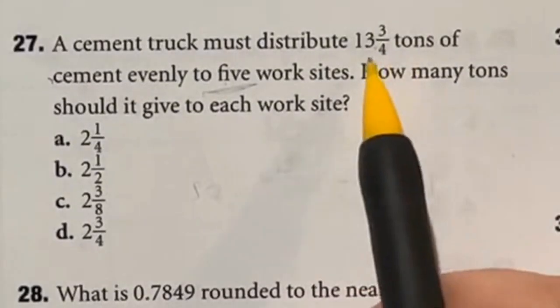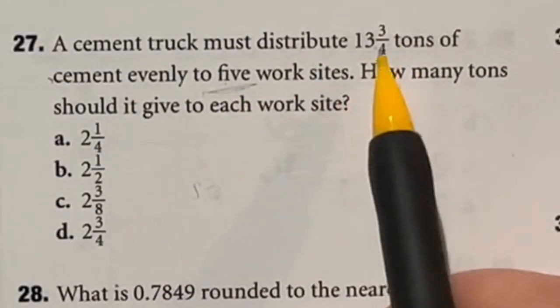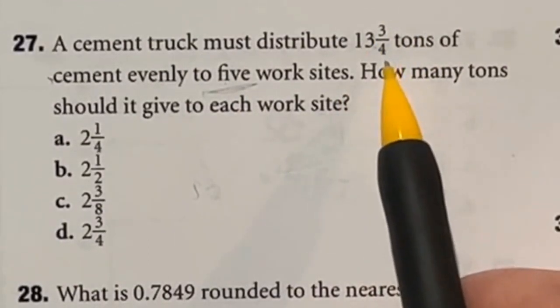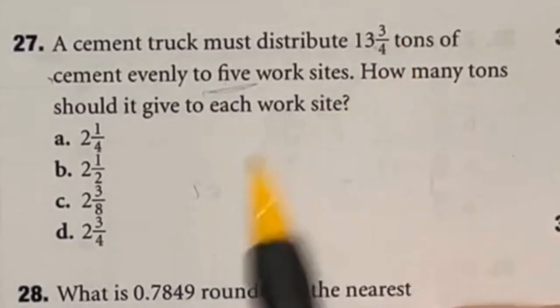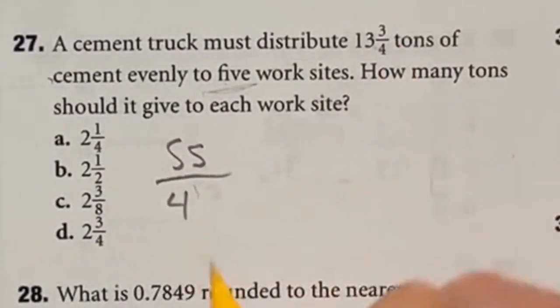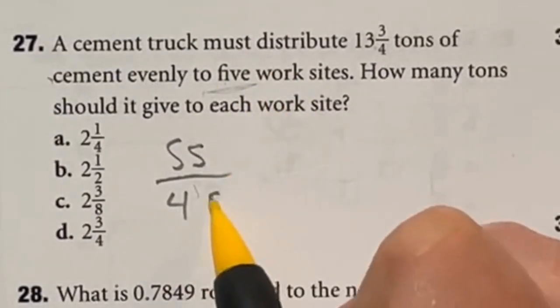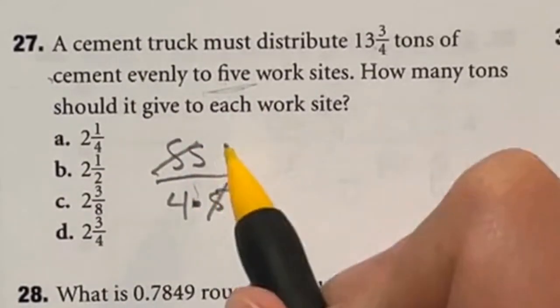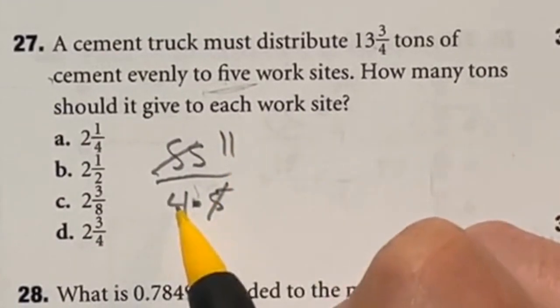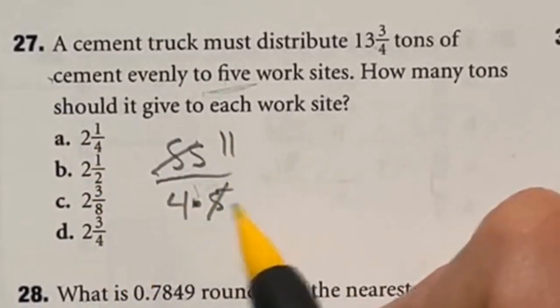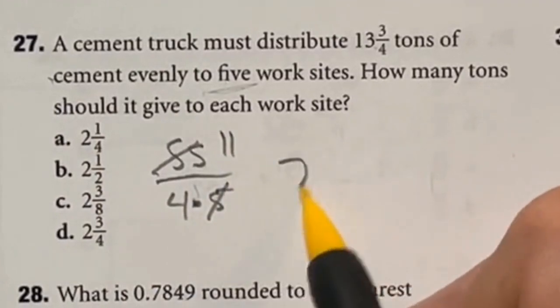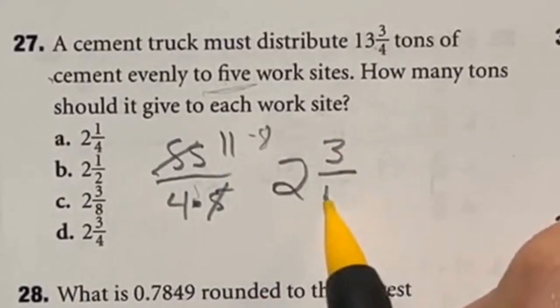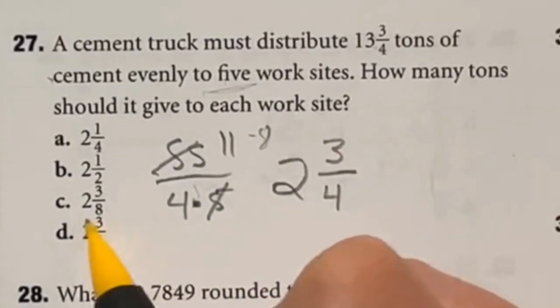We are going to be dividing this thirteen and three-fourths by the five work sites. First thing I'm going to do is convert this to an improper fraction so thirteen times four is going to give me fifty-two. Adding that three on top gives me fifty-five over four. This makes things a bit easier because when we divide by five or in other words put it on the bottom of the fraction I can cancel that out with the top. So that means fifty-five divided by five is just eleven so we end up with eleven over four. Let's convert that back into a mixed number. Well four times two gives me eight so that means we have two whole and then eleven minus that eight that's left over is going to give me three out of the four still left over which is going to be answer D.